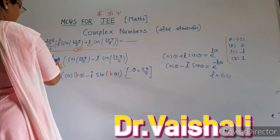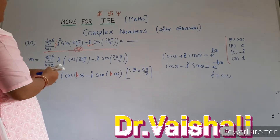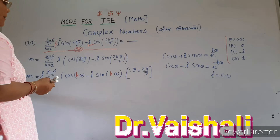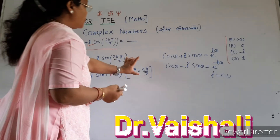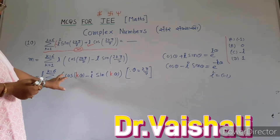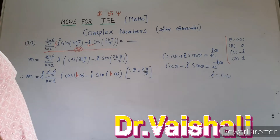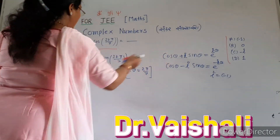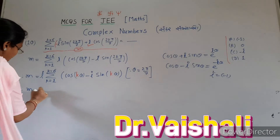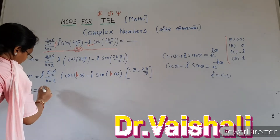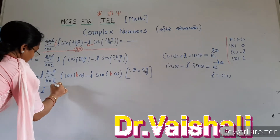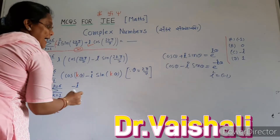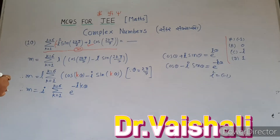Now we take i common. So sigma K equal to 1 to K equal to 6, i bracket: cos of 2Kπ/7 minus i·sin(2Kπ/7). Let theta equal to 2π/7 and keep that. So we get: i into sigma K equal to 1 to K equal to 6, cos Kθ minus i·sin Kθ.